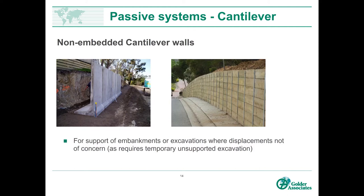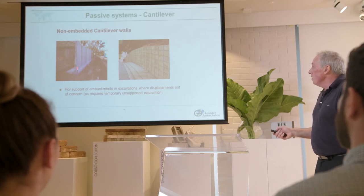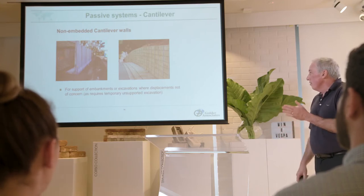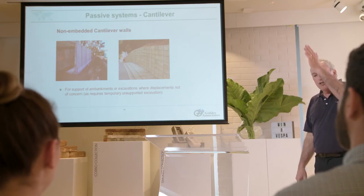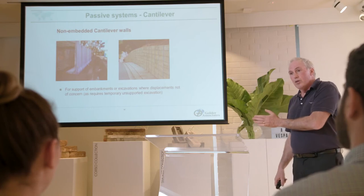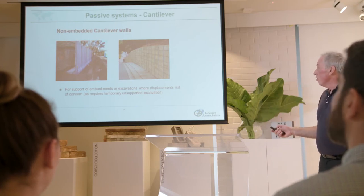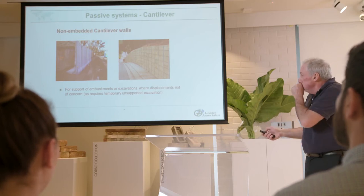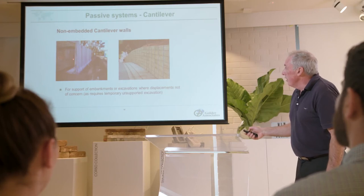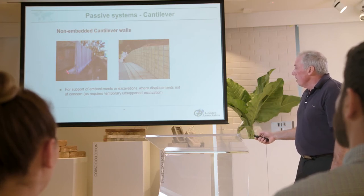A second form of passive system is a cantilever wall system. There are several types: counterfoot-type walls with precast units, or steel H-sections with timber lagging in between. These can be used for support of embankments or excavations where displacements are not of concern, because you have to make the excavation before you put the wall in. Looking at this photo, there is a gentleman in that gap — I question the occupational health and safety of someone standing there. It certainly wouldn't be allowed on a site I would be on.